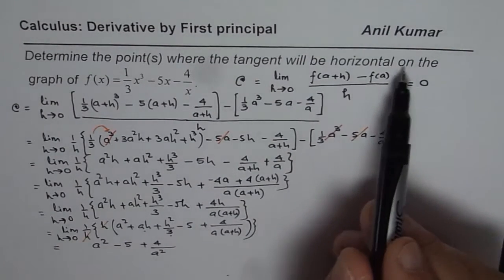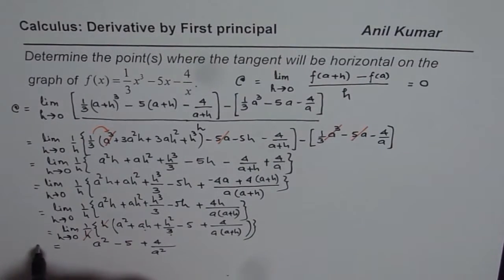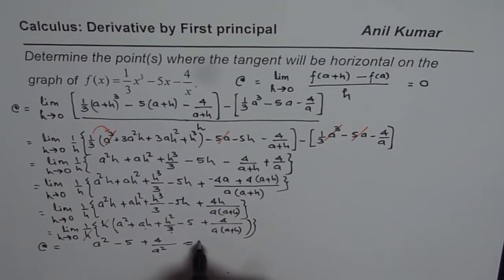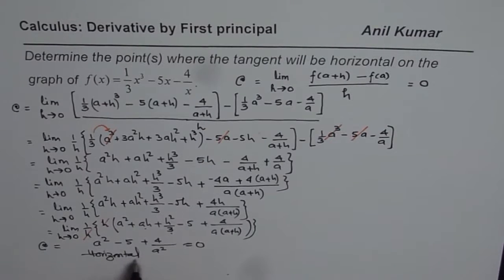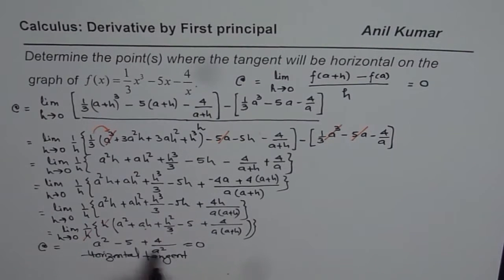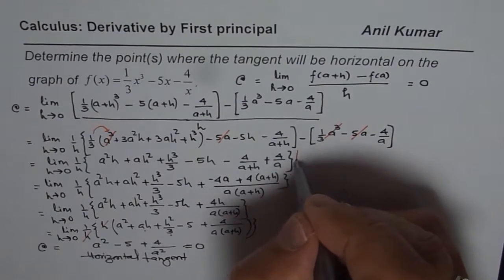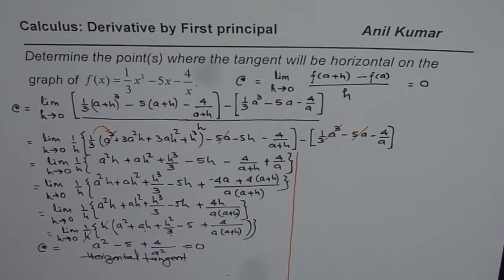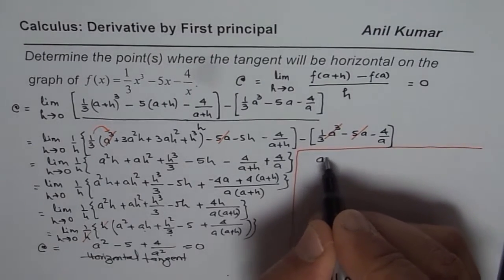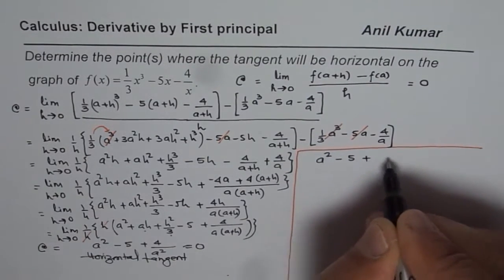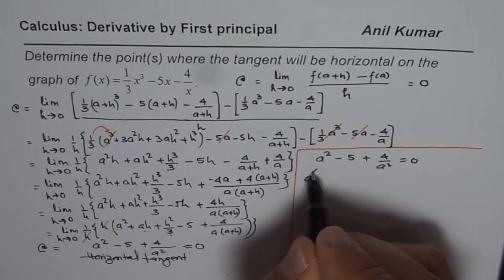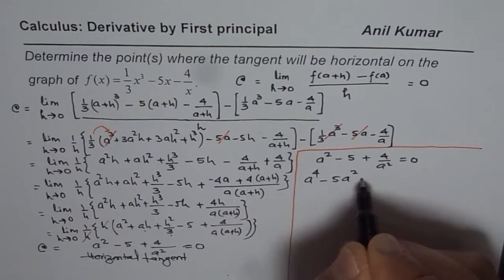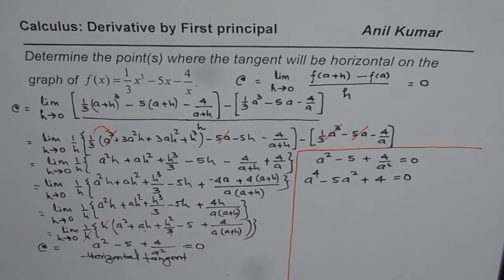Since we are looking for a horizontal tangent, the instantaneous rate of change should equal 0. So let us solve this equation: a² - 5 + 4/a² = 0 to find the possible values of a.